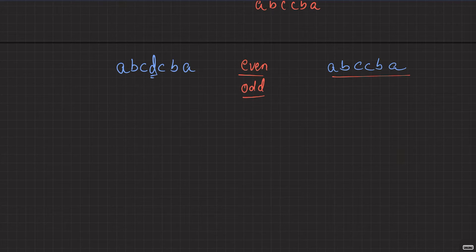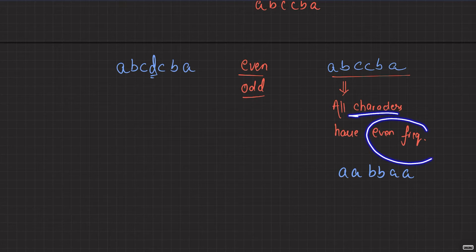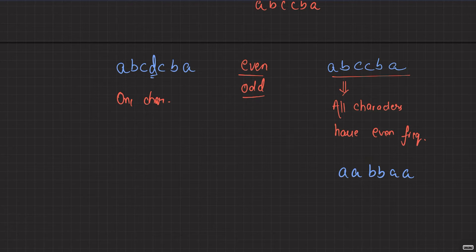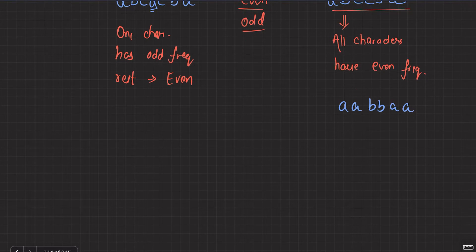Here's the key observation: in an even-length palindrome, all characters have even frequency. In an odd-length palindrome, only one character has odd frequency — the rest all have even frequency. This is a simple but important observation to make.